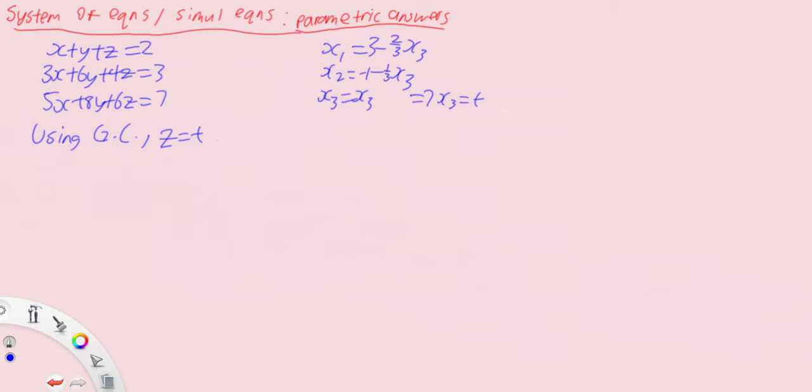Then what we have is x equals 3 minus 2 over 3t, and then y equals minus 1 minus 1 over 3 times t. Then from here, this is basically your answer. You notice that you have an infinite number of answers, because t can be any real number.